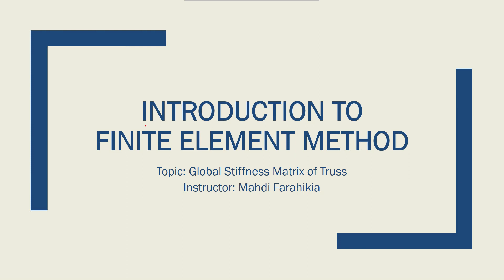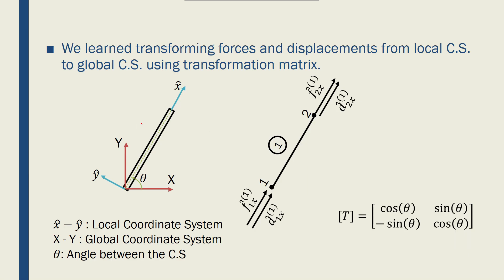The next step in deriving the global surface matrix of a truss element is to expand the local stiffness matrix into a 4 by 4 matrix. We had a discretized truss element with the local coordinate system shown in blue with a hat on top of x and y, and the global coordinate system, capital X and capital Y, shown in red. The two coordinate systems are at angle theta. We drew the free body diagrams and found the transformation matrix that transforms local forces and displacements into global forces and displacements.